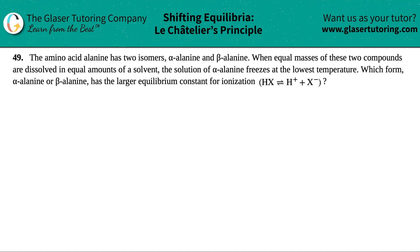Number 49. The amino acid alanine has two isomers, alpha alanine and beta alanine. When equal masses of these two compounds are dissolved in equal amounts of solvent, the solution of alpha alanine freezes at the lowest temperature. Which form has the larger equilibrium constant for ionization?